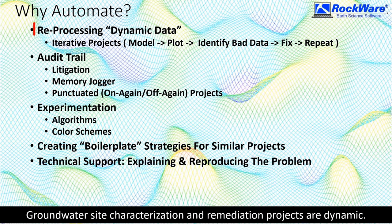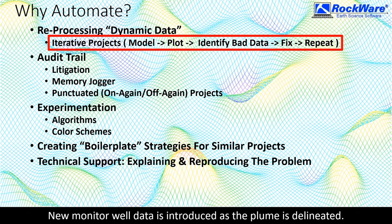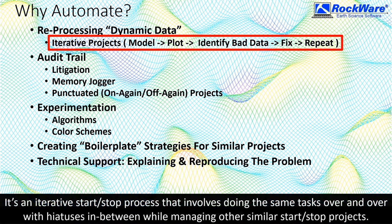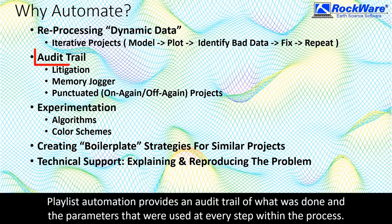Groundwater site characterization and remediation projects are dynamic. New monitor well data is introduced as the plume is delineated. Bad data is corrected. It's an iterative start-stop process that involves doing the same tasks over and over with hiatuses in between while managing other similar start-stop projects. Without automation, this repetition can destroy our will to live. Playlist automation provides an audit trail of what was done and the parameters that were used at every step within the process.